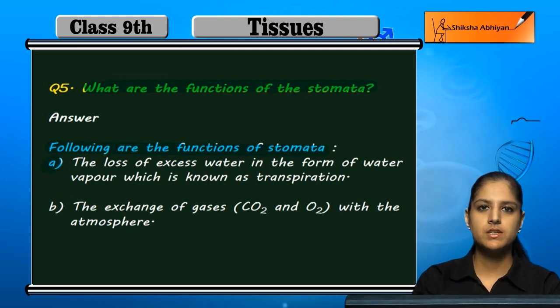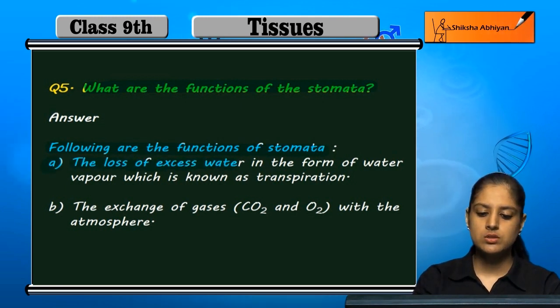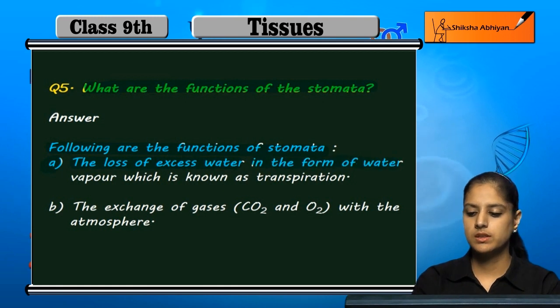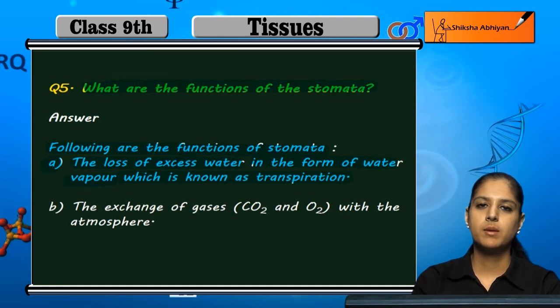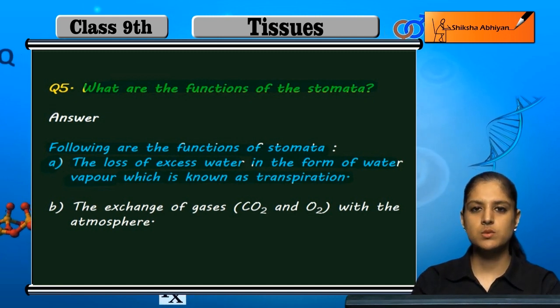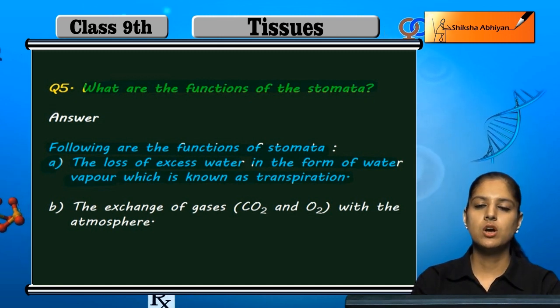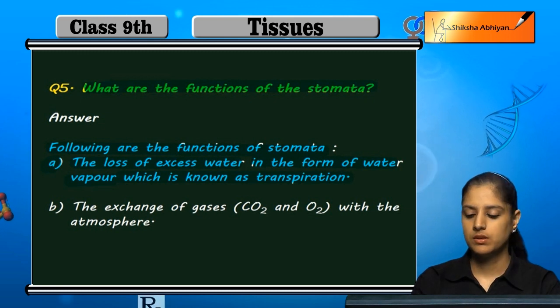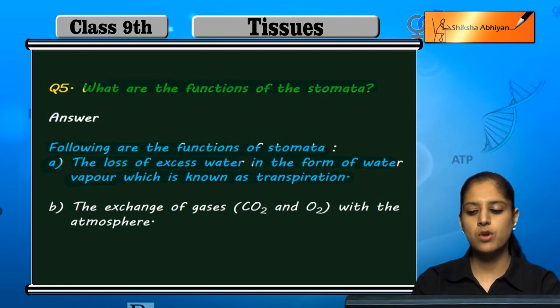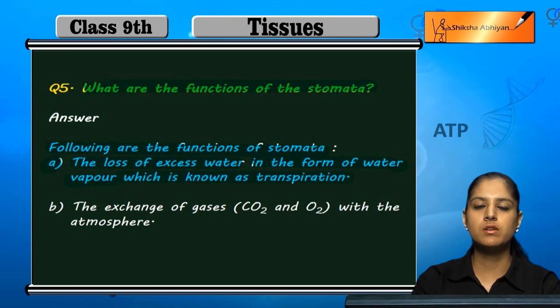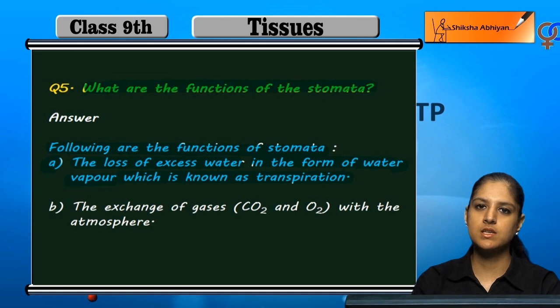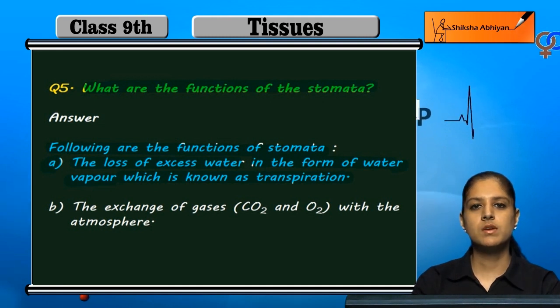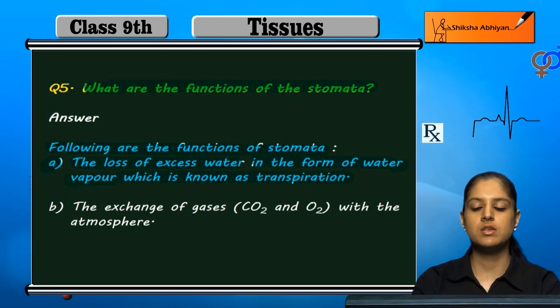First function of stomata is the loss of excess water in the form of water vapor, which is known as transpiration. When a plant has excess water, it needs to be removed, and it is expelled in the form of water vapor. This is the stomata's job. The process by which excess water is removed from the plant body in the form of water vapors is called transpiration.